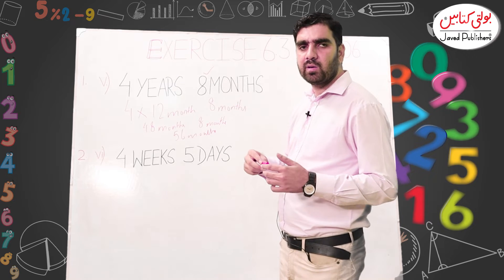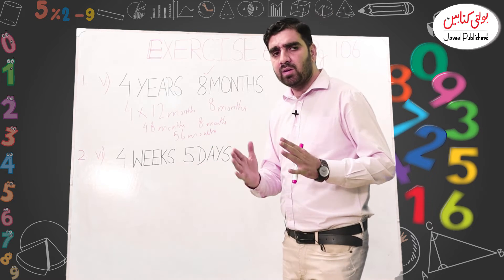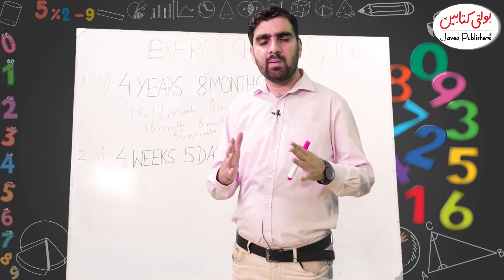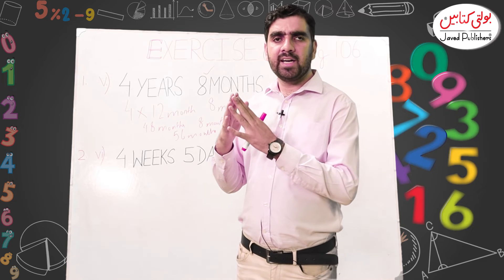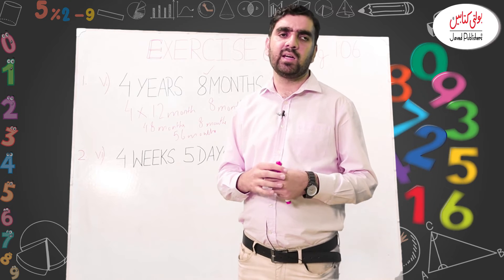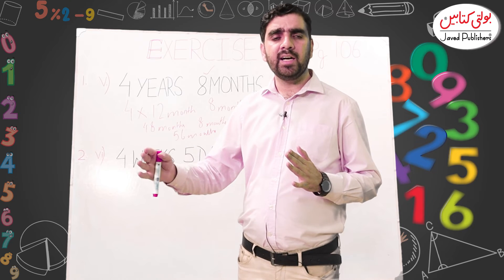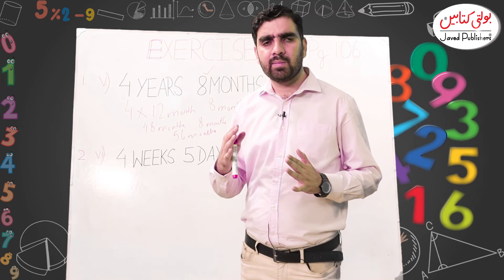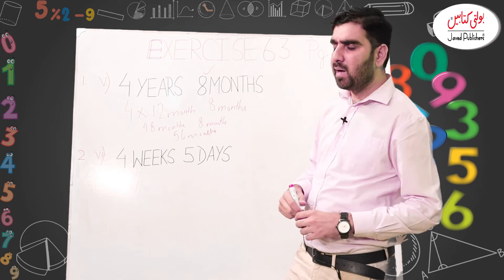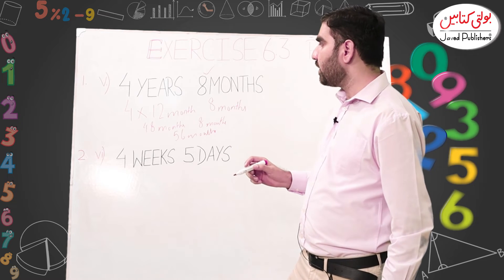Now we will move towards question number two, in which we are going to convert weeks into days. We will give students some previous knowledge: since one week has seven days, whenever we convert weeks into days, we multiply the given number of weeks by seven. For example, two weeks: 2×7 = 14 days. Four weeks: 4×7 = 28 days. In question number two, I am going to solve part six.